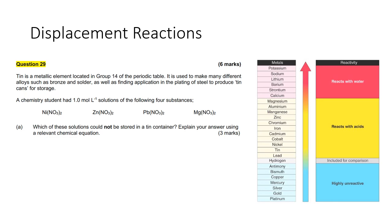This is an exam question. Tin is a metallic element located in Group 14 of the periodic table. A chemistry student has a one molar per litre solution of four substances. Which of these solutions could not be stored in a tin container? The concern is that if the solution reacts with the tin container, it will cause holes in it or just react destructively — which is not going to be good.